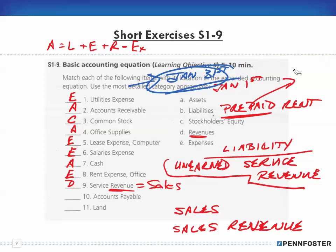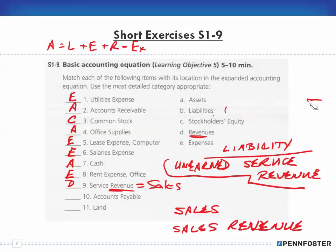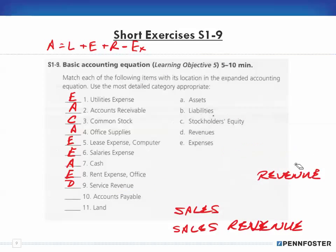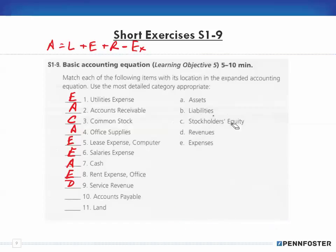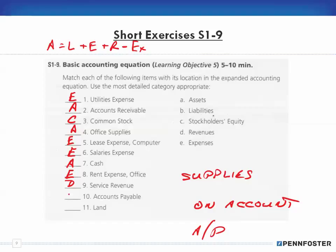Accounts payable is something you owe. If you go to Home Depot and buy supplies on account — on credit — you have an accounts payable, which is a liability — category B. Land is something a business owns, so that's an asset — category A.